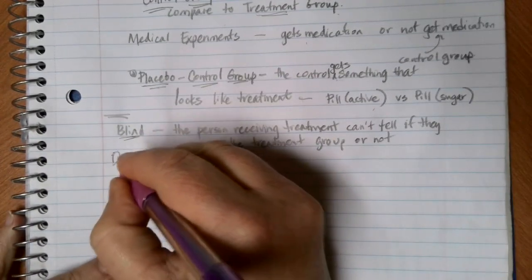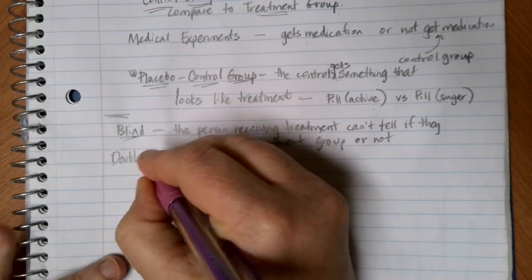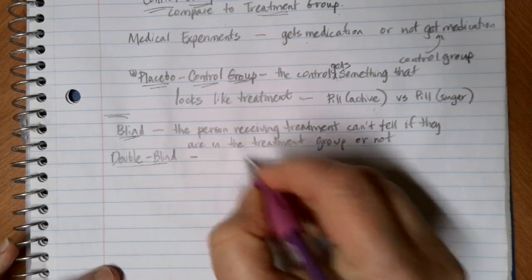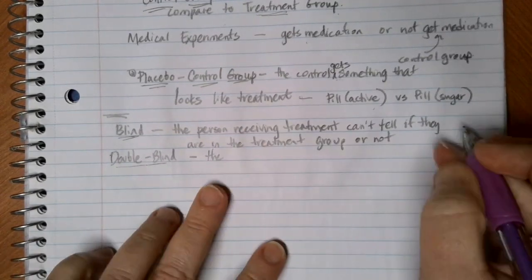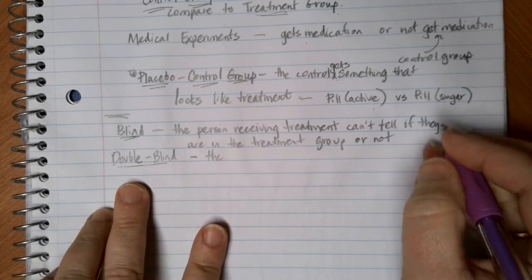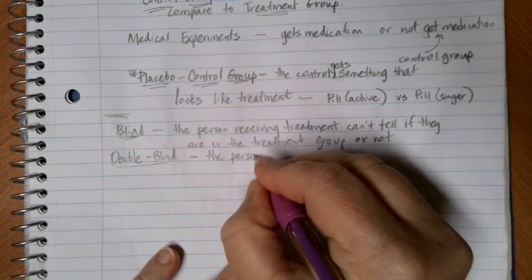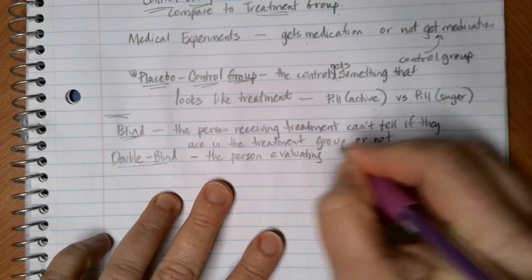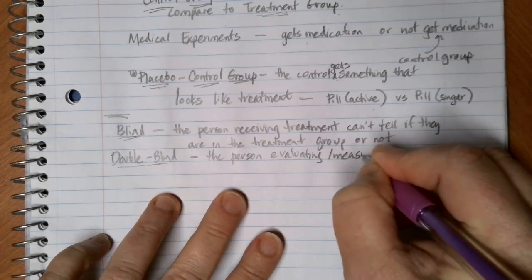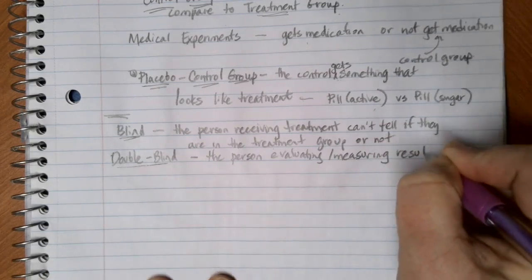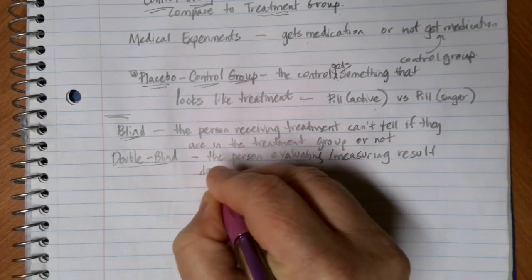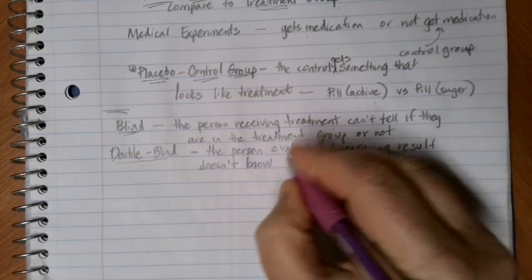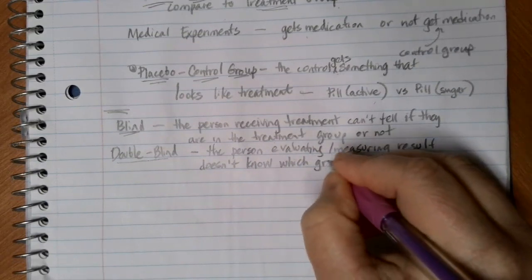Another type of well-designed experiment, if you can pull it off, is a double-blind experiment. In this person, the person receiving the treatment can't tell if they're in the group or not. That's the blind part. The double-blind means that the person evaluating or measuring the result doesn't know which group they're in.